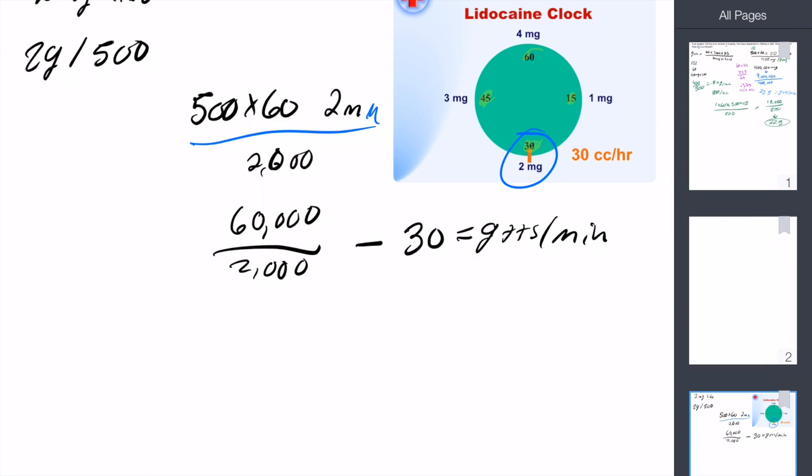So as you can see, this does match our drug dosage and our drip rate: 30 drops, 2 milligrams. So what was ordered.